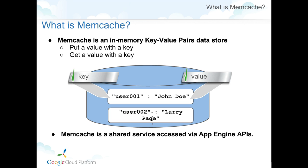What is Memcache? Simply put, Memcache is an in-memory key-value pair data store. The data store sits in memory, which is why it's much faster compared with other data stores sitting on disk. It's also very easy to use. You can put anything that is serializable into Memcache as either a key or a value — it's language independent. In both Java and Python, you can put in any object with a serializable interface. In Python, the object must be serialized using the pickle module.